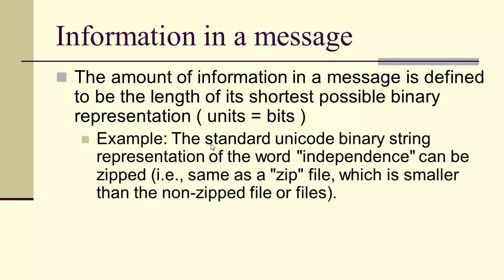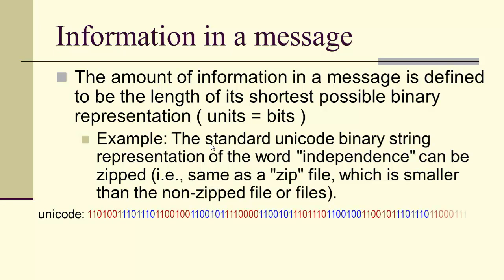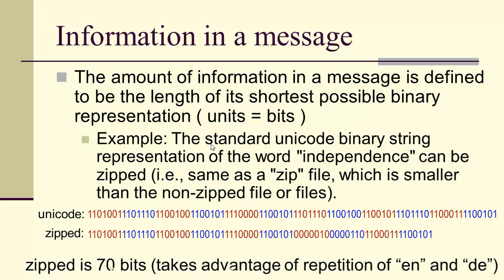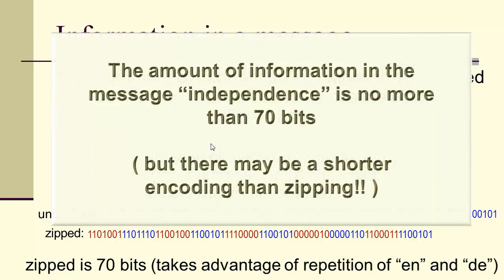There's an idea called zipping a file: the zipped version is smaller than the non-zipped version. We had this 84-bit representation of 'independence', but if we zip it, it's actually shorter and still represents the same idea. The zipped version is 70 bits long, taking advantage of the fact that 'EN' and 'DE' are repeated in the word 'independence'. So the amount of information in the message 'independence' is no more than 70 bits.